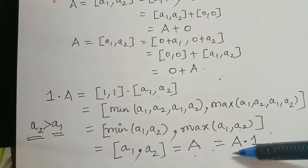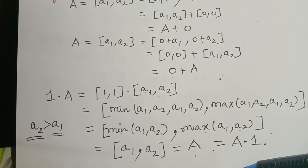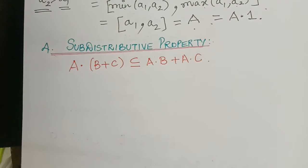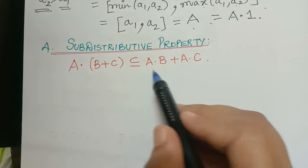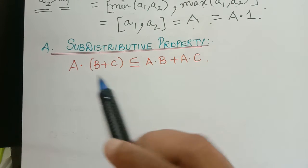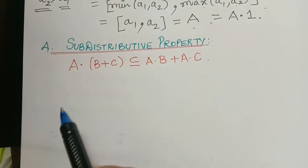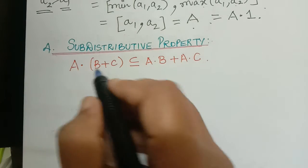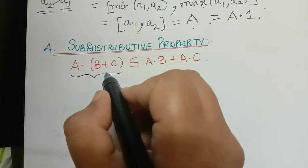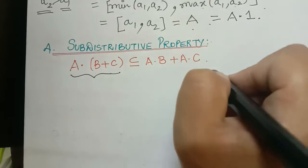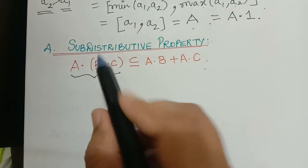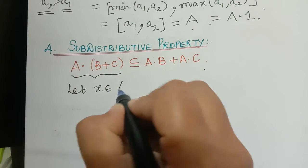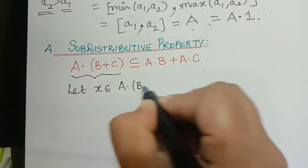Next we shall see the sub-distributive property. The sub-distributive property states that a multiplied with (b plus c) is a subset of a multiplied with b plus a multiplied with c, where a, b, c are intervals. In order to prove that this is a subset, we have to take an element in this set and prove it also belongs to the other set. Let x be an element of the interval a multiplied with (b plus c).